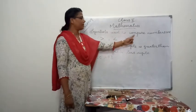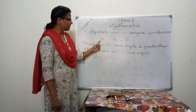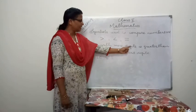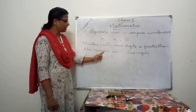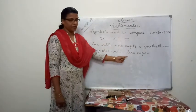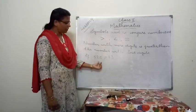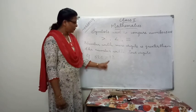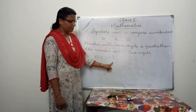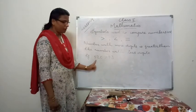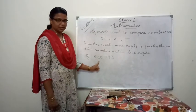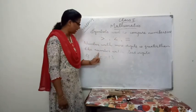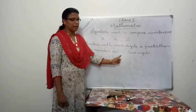Symbols used to compare numbers are greater than, less than, and equal to. A number with more digits is greater than the number with fewer digits. For example, 520 is greater than 43. 43 has 2 digits, whereas 520 has 3 digits. That means a number with more digits is greater than the number with fewer digits.